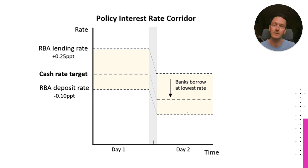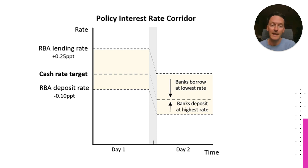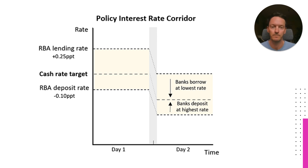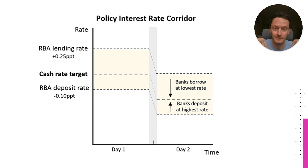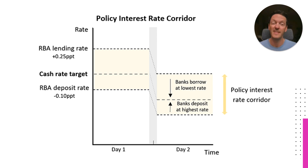Banks will then borrow from other banks at the lower rate and deposit at the higher rate, depending on whether they have a surplus or deficit of money in their exchange settlement accounts. A little hot tip on how to remember which is which: deposit starts with the letter D, which stands for down. So the one that's further down is the deposit rate — lending rate at the top, deposit rate at the bottom. And that is what we call the policy interest rate corridor.